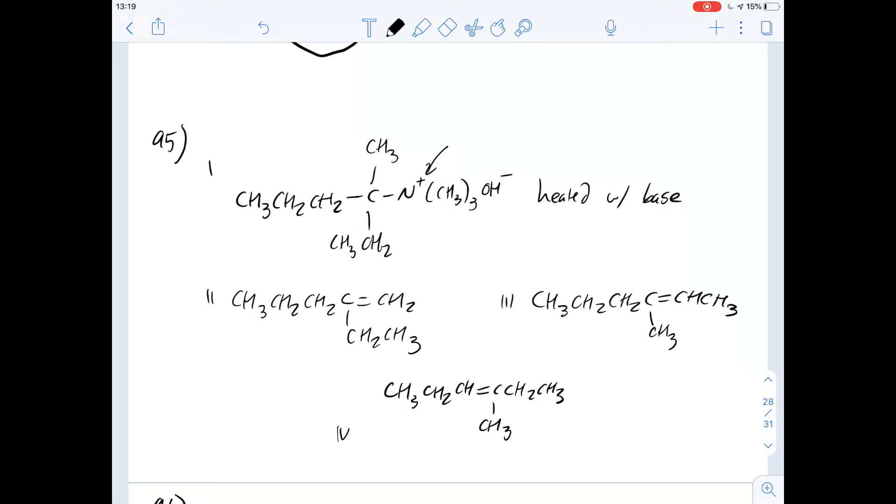95 says consider chemical one. There's three alkenes that it could produce when heated with the base, and we've given the three of them here, which are options 2, 3, and 4. We were told that the alkene formed in the greatest proportion is the one that is least substituted with alkyl groups.